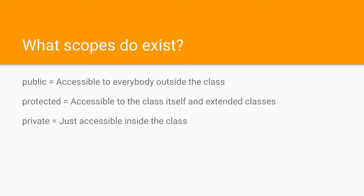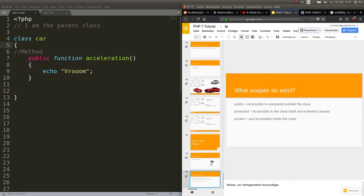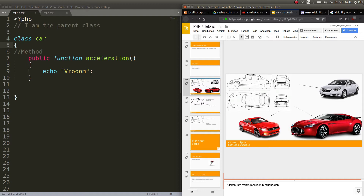Public means that a property in a class is accessible to everybody outside the class, so you can create objects from it and use it in whatever way you like. Protected means it's accessible to the class itself and to extended classes — you'll see that in a minute. And private means it's only accessible inside its own class. If you're not sure what object-oriented programming is, refer to the last tutorial where we talked about blueprints and the objects we create.